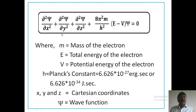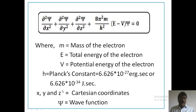The equation is: ∂²ψ/∂x² + ∂²ψ/∂y² + ∂²ψ/∂z² + (8π²m/h²)(E − V)ψ = 0. Where M is the mass of the electron, E is the total energy of the electron, V is the potential energy of the electron, H is Planck's constant — 6.626 × 10⁻²⁷ erg·s or 6.626 × 10⁻³⁴ J·s. X, Y, Z are Cartesian coordinates, and ψ is the wave function.